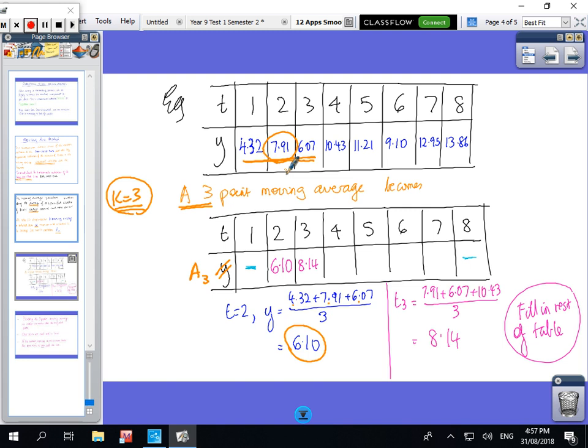Instead of having 7.91 for the value of two, we're averaging the values on either side, including that value, and we come up with a new number for the value of two. When t equals two, instead of having 7.91, we've got the average of the numbers around it, three numbers.